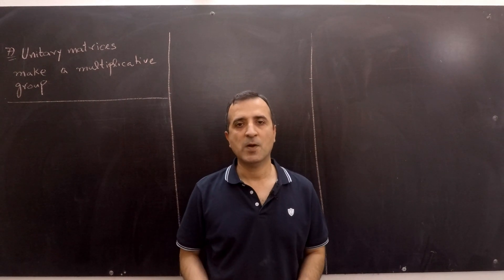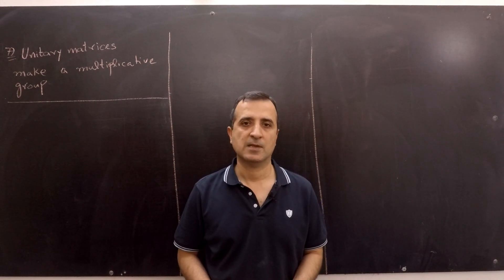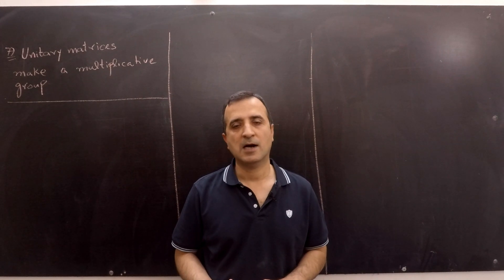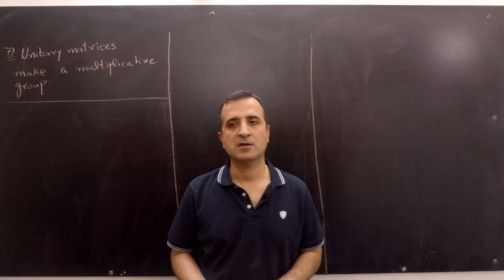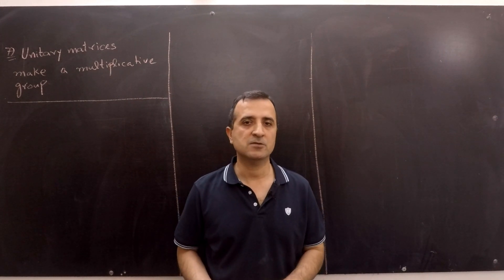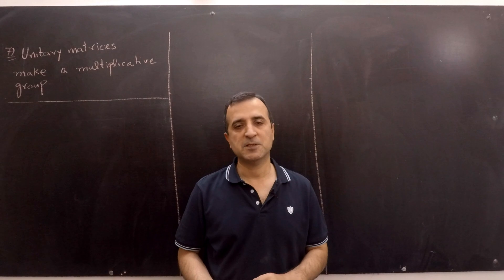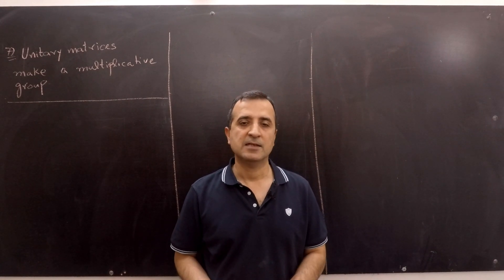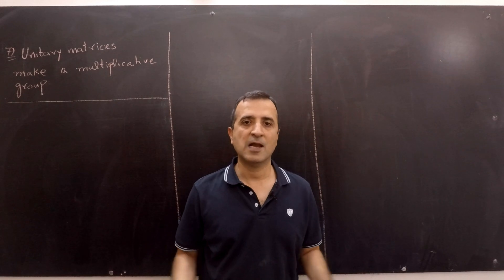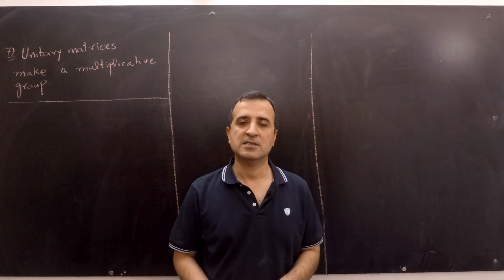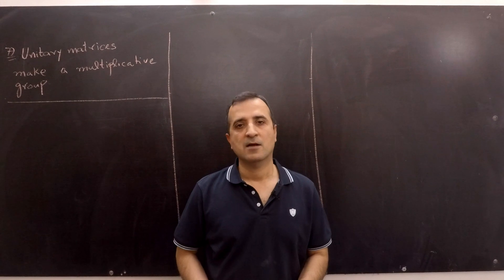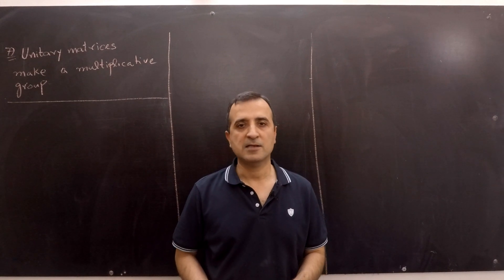A multiplicative group has 4 different properties. Number 1: it must be closed under the operation — in this case, multiplication. Number 2: there must exist an identity element for all elements of the group. Number 3: there must exist an inverse for each element of the group. And finally, Number 4: associativity — the order of brackets will not matter.